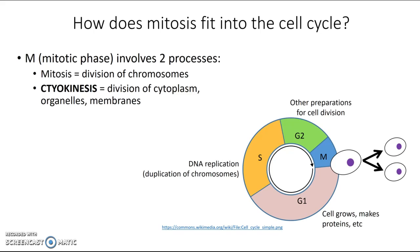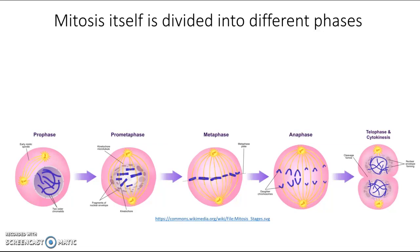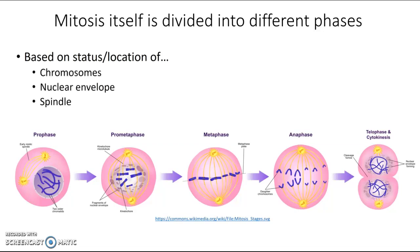Another vocabulary word you need to know is interphase. When we're focusing on the M phase, we lump everything else — G1, S, and G2 — together as interphase. Mitosis itself also gets further divided into different phases based on the status and location of the chromosomes, the nuclear envelope, and the spindle. In class, we're going to take a closer look at exactly what happens in each one of these phases. So until then, take care of yourself, take care of each other.